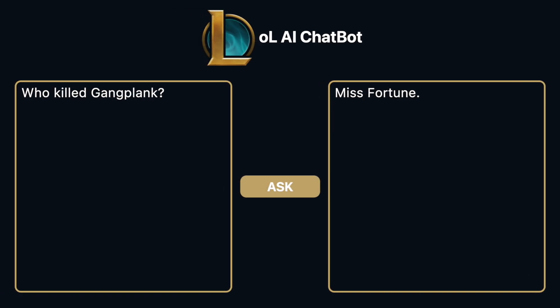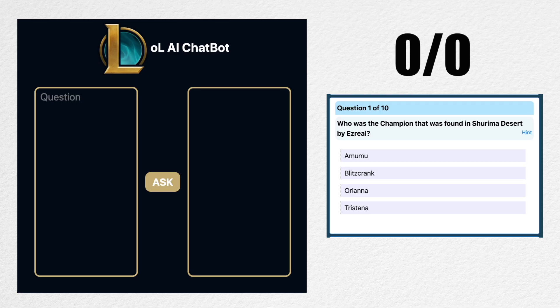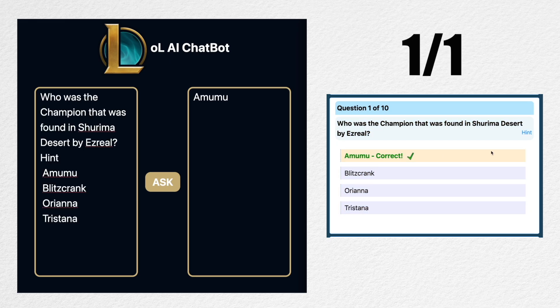Now that it's looking like an actual application, let's take a League Lore quiz. If you want to follow along, just tally the number of questions you get correct and we'll see if you can beat the AI chatbot. First question: who was the champion that was found in the Shurima Desert by Ezreal? Amumu. So it knows a little bit.